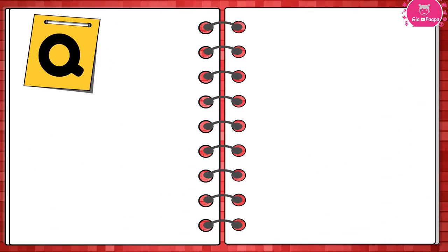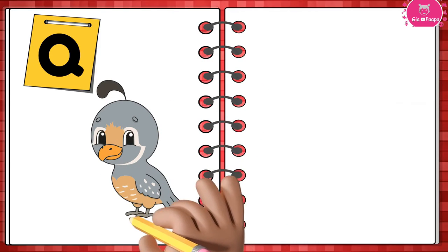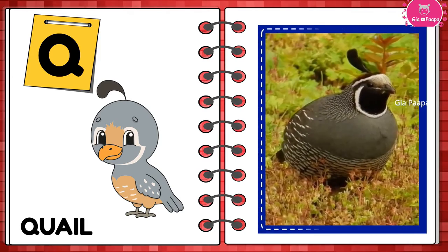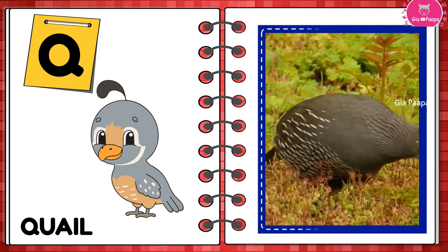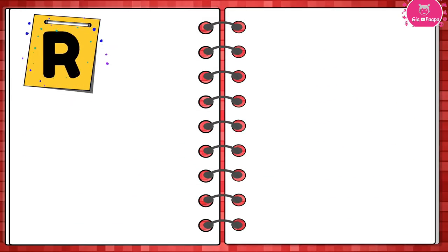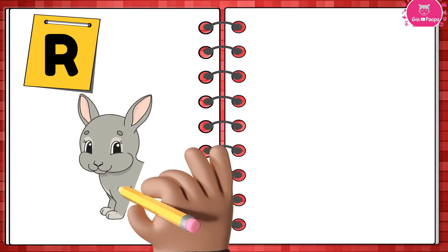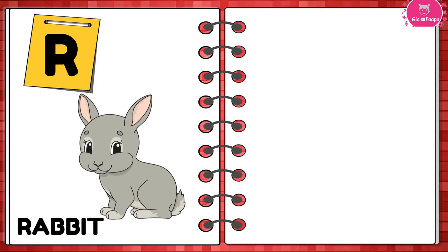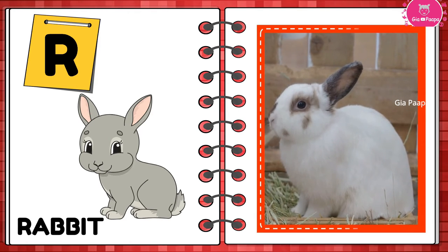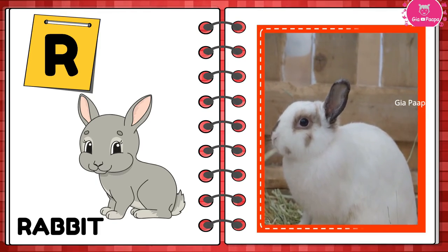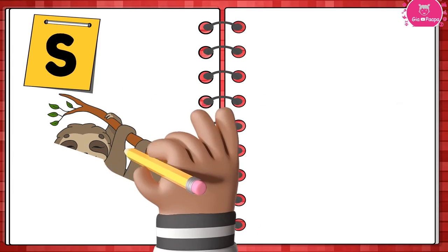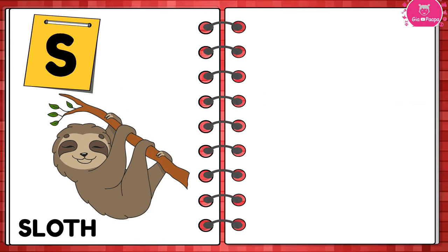Q is for Quail. Quail. Q is for Quail. Quail. R is for Rabbit. Rabbit. R is for Rabbit. Rabbit. S is for Sloth. Sloth.